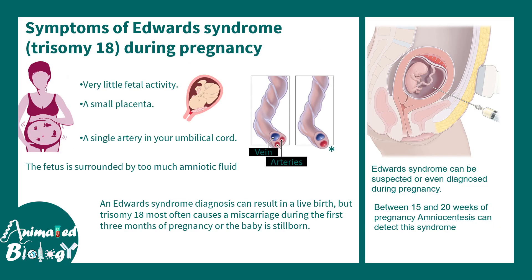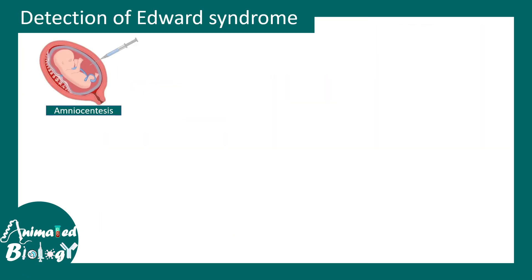The symptoms of Edward syndrome can be detected during pregnancy. Signs include very low fetal activity, a small placenta, and a single artery in the umbilical cord — all of which are indicative of Edward syndrome. Detailed testing would be done by amniocentesis or chorionic villus sampling.